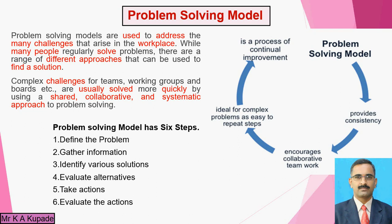The first step is to define the problem. The second is to gather information related to that problem. The third is to identify various solutions. The fourth is to evaluate alternatives. The fifth is to take action on that particular problem by considering the solution. The sixth is to evaluate the action — that means whatever action you have taken, whether it is getting a good result or not — in the form of feedback we have to evaluate. These are the steps considered to get effective results from this particular model.